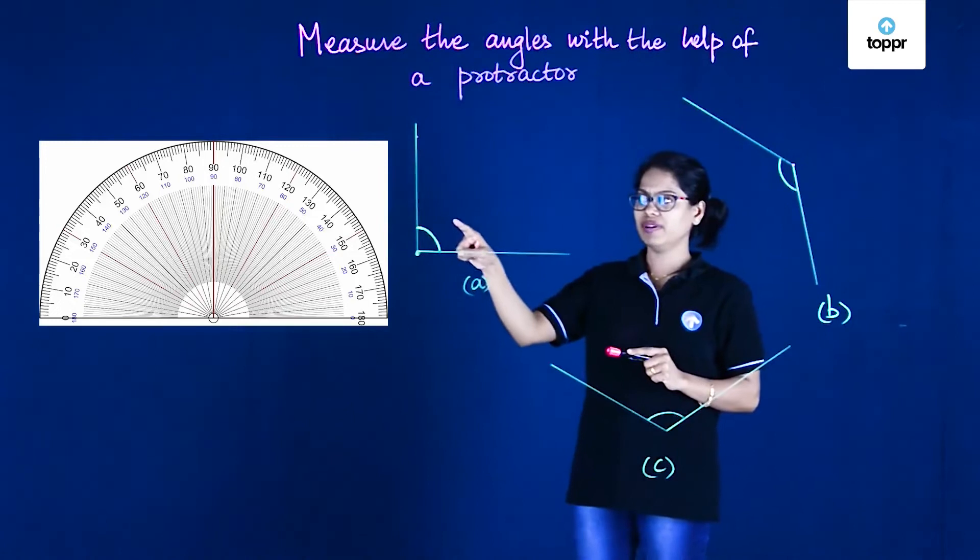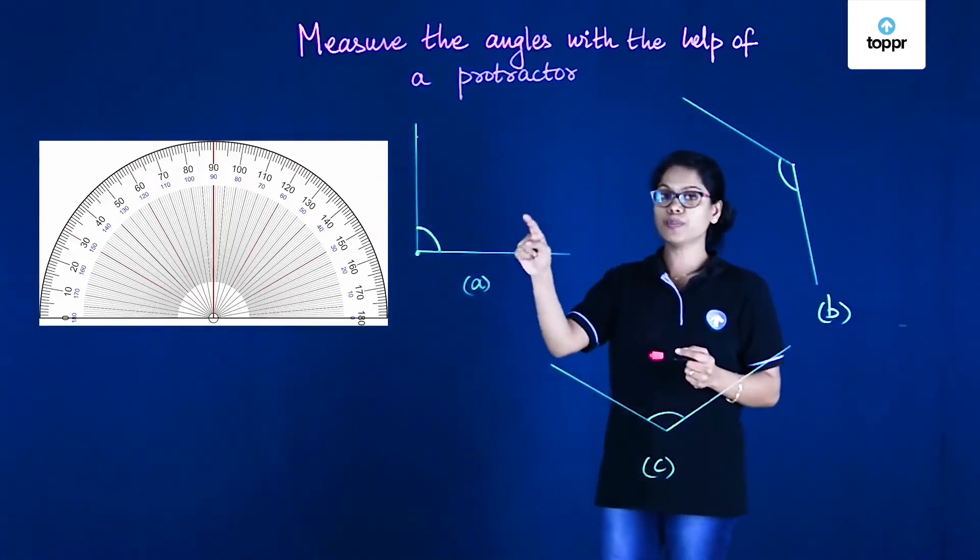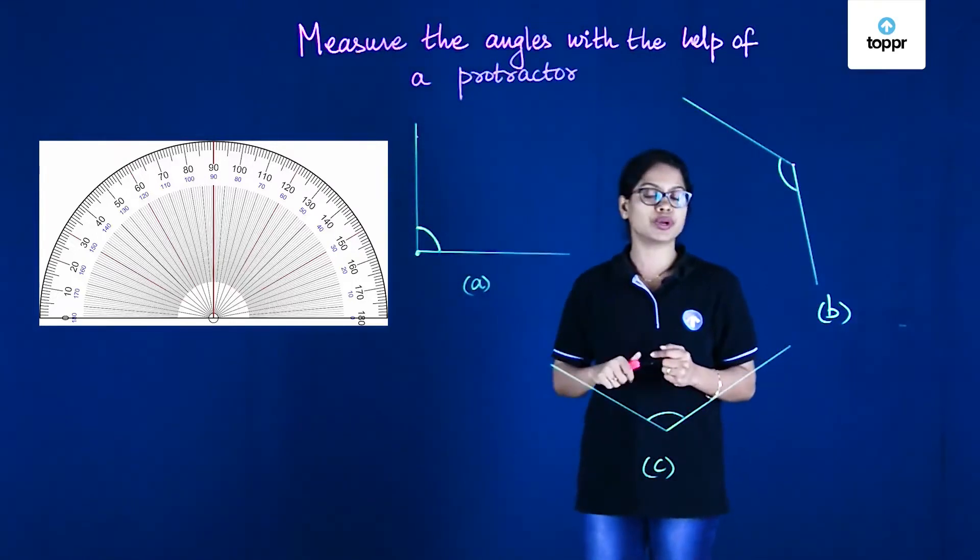Apart from that, we have a line here at the bottom that is called the baseline, and we have a center point that's right in the middle of the protractor.